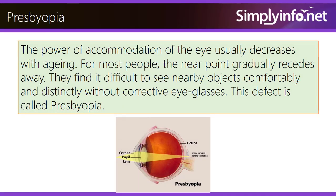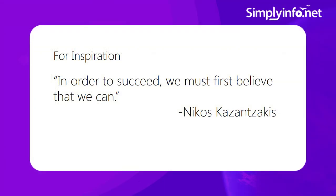Presbyopia: the power of accommodation of the eye usually decreases with aging. For most people, the near point gradually recedes away — they find it difficult to see nearby objects comfortably and distinctly without corrective eyeglasses. This defect is called presbyopia.